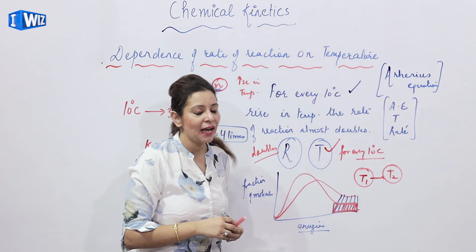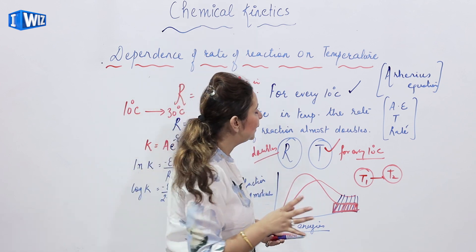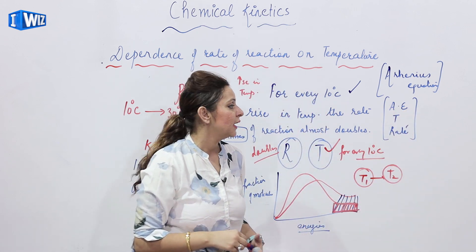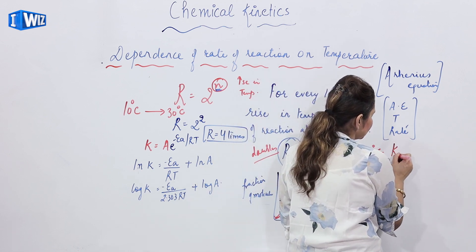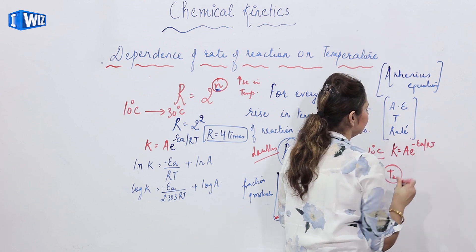We can say that Arrhenius actually conducted few experiments and led to the formulation of a certain expression which relates activation energy, temperature and rate of the reaction. And you know what is that expression? It comes out to be K is equal to AE minus EA upon RT.